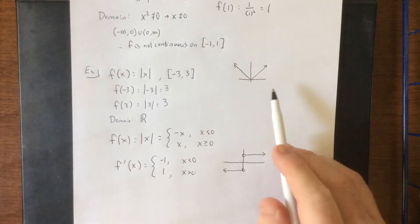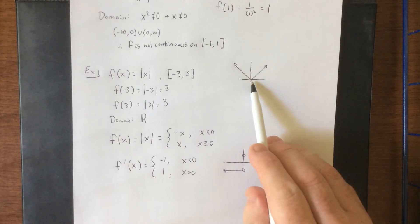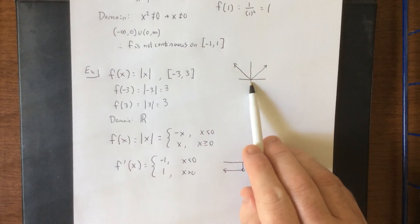Now this is manifested in the original graph by saying this part of the graph has a slope of negative 1 and this part of the graph has a slope of positive 1 giving us this nice sharp corner right here.